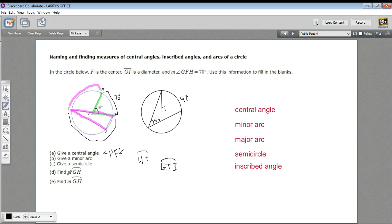All right. D says find the measure, that little m is measure, of arc GH. So GH is here, and it's got a central angle of 70. So the arc length is 70. So this is 70 degrees.